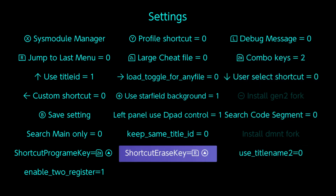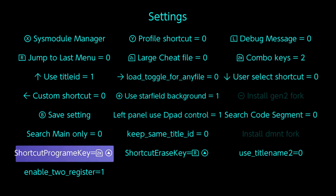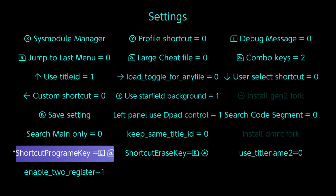If you want to change the default shortcut program A key or shortcut erase key, push A on it then input the new button combination you want to use for the shortcut. In this case, push ZL then L for the shortcut program E key.